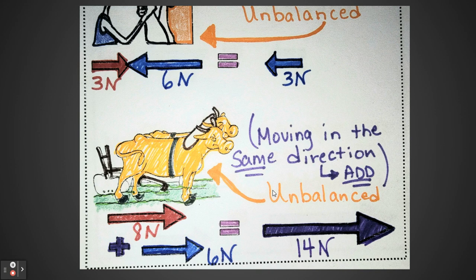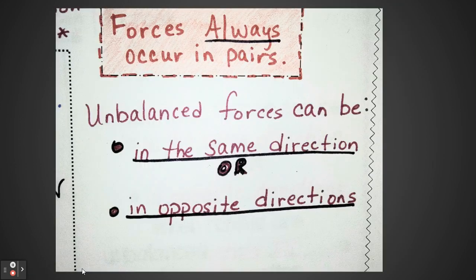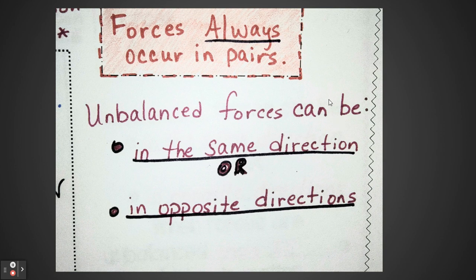Remember to pause or stop the video if you need to. Now that little box at the top reminds us that forces always occur in pairs — you can have a force coming from the top such as gravity pulling down, or the object pushing off of something, forces from the left, forces from the right, even diagonal. So it's always in pairs. Now, talking about unbalanced forces: unbalanced forces can be in the same direction or in opposite directions.